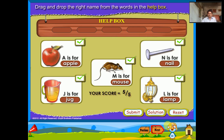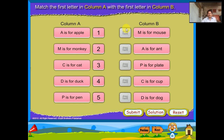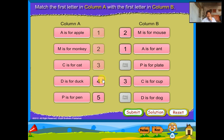Match the first letter in column A with the first letter in column B. Column A, column B: A is for Apple, A is for Ant. M is for Monkey, M is for Mouse. C is for Cat, C is for Cup. D is for Duck, D is for Dog. P is for Pen, P is for Plate.